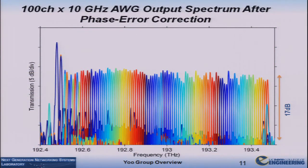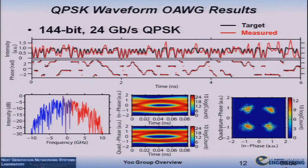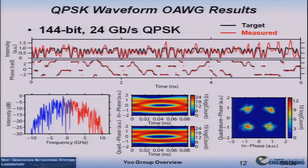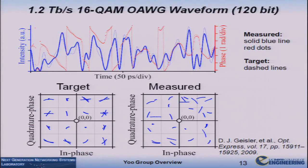This is the fabricated 100-channel device with a 17 dB extinction ratio on the Indium Phosphide AWG, followed by an IQ modulator. Students have measured various waveforms — QPSK and QAM — in temporal and spectral domains. Even with 10 GHz channel spacing, you can create a continuum of IQ modulated signals. We have gone up to 1.2 terabits per second, emulating 16 QAM signals with a limited number of bits.